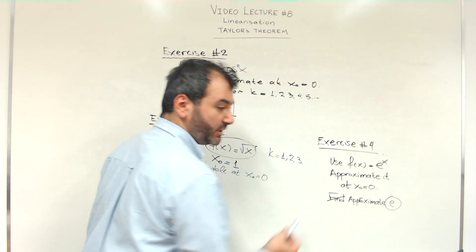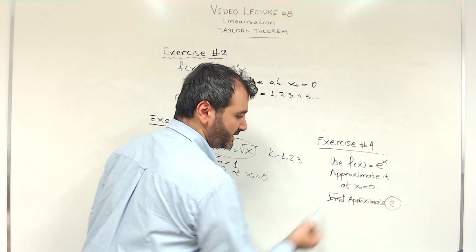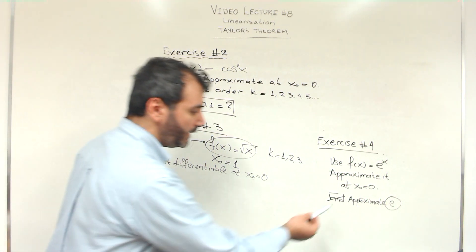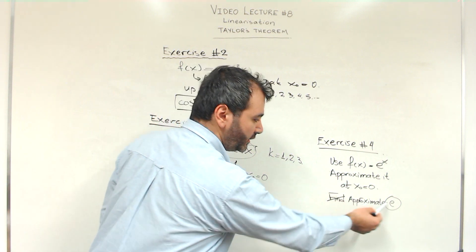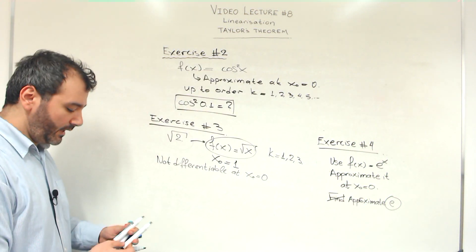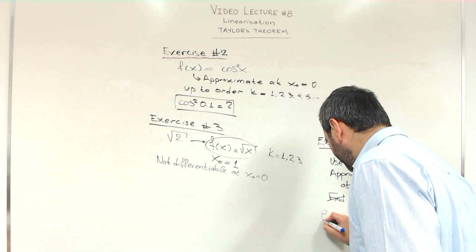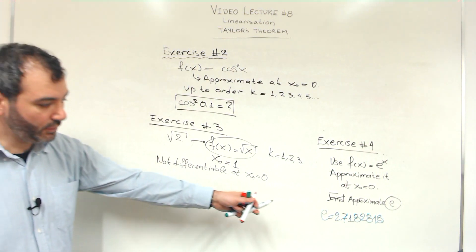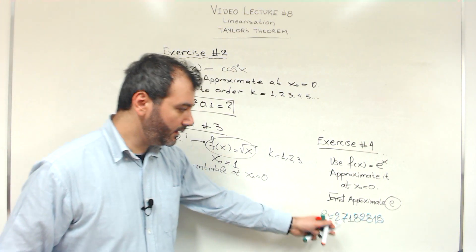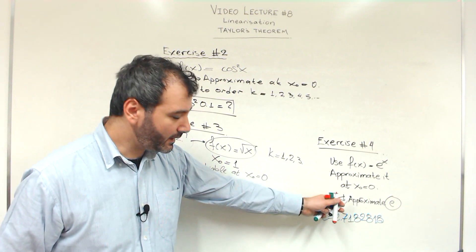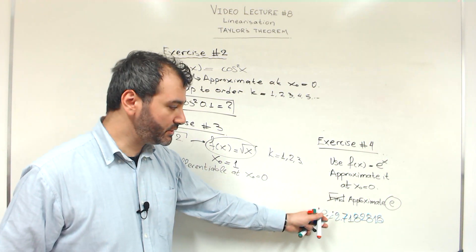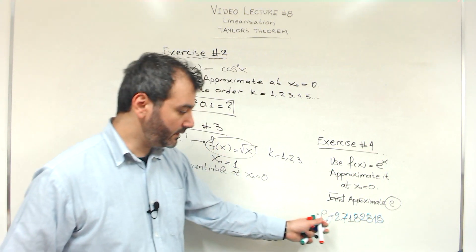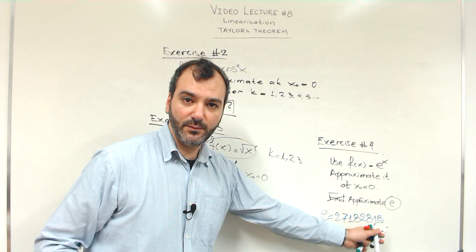One more exercise: use the exponential function e^x. Approximate it at x0 = 0 with a polynomial of degree 1, 2, 3, and so on. Then use your approximation to find an approximate value of e — the accurate value of e is 2.71828... The question is: how large should k be so that you are able to recover this number to many decimal points?